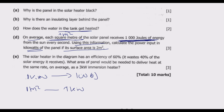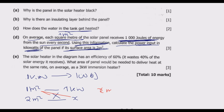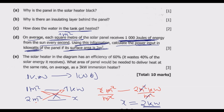One meter squared gives 1 kilowatt. We need to find the power for a surface area of 2 meters squared. Using direct proportion and cross-multiplying: x = (2 m² × 1 kW) / 1 m² = 2 kilowatts. So the power input is 2 kilowatts.